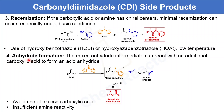Another side product of CDI reactions is anhydride formation. The mixed anhydride intermediate can react with additional carboxylic acid, forming an acid anhydride as a product instead of the desired amide bond. To avoid anhydride formation, we should avoid using excess carboxylic acid. Another reason for anhydride formation is insufficient reactivity of the amine.